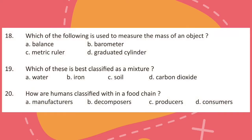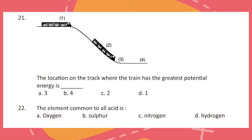Question 18: Which of the following is used to measure the mass of an object? Question 19: Which of these is best classified as a mixture? Question 20: How are humans classified in a food chain? Question 21: The location on the track where the train has the greatest potential energy is?